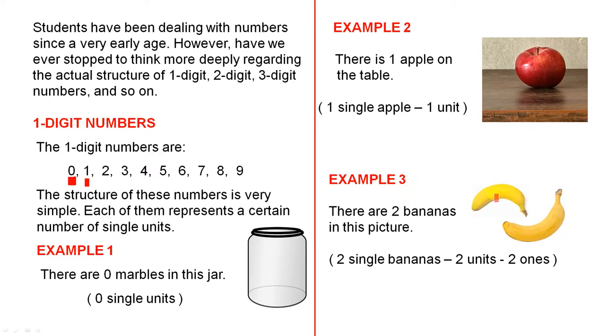Example three. In this picture we have two bananas. There are two bananas in this picture. Two bananas or two single bananas equals two units equals two ones. So there's one and there's another one. So the two means there are two single units or two ones. That's the meaning of two.